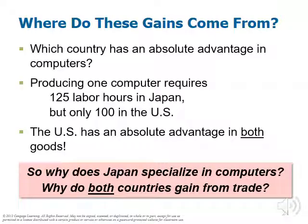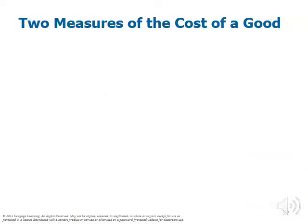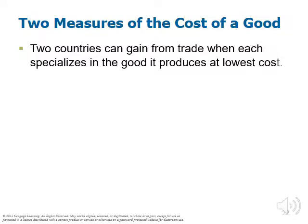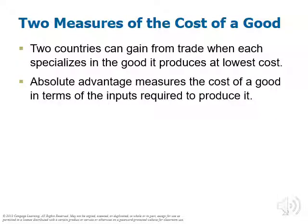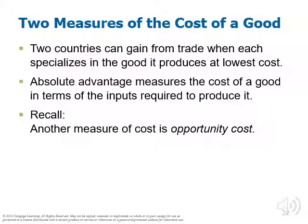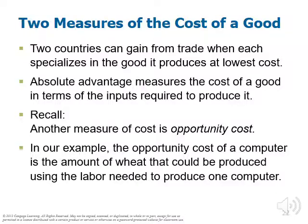So why does Japan specialize in computers, and yet both countries still gain? We need to broaden our understanding of cost. Two countries can gain from trade when each specializes in the good it produces at the lowest cost. Absolute advantage measures cost in terms of inputs required — a sort of explicit cost. But there's another measure of cost: opportunity cost, which is what you must give up to get something. In our example, the opportunity cost of a computer is the amount of wheat that could be produced using the labor needed to produce one computer — the wheat you must give up to free up enough labor.